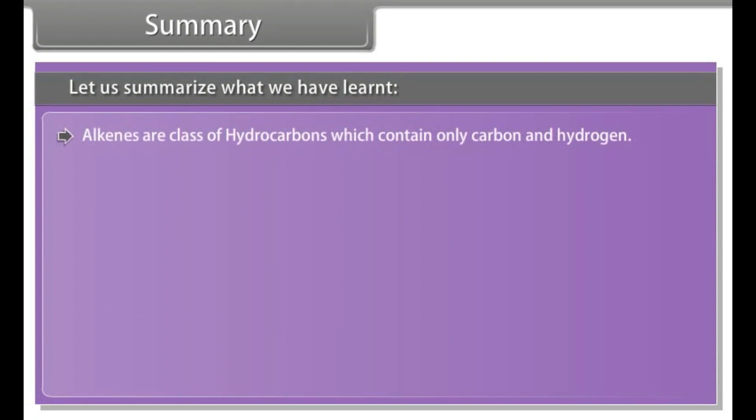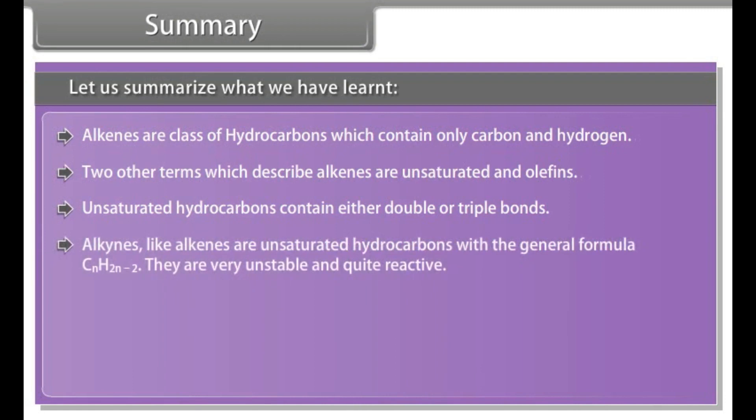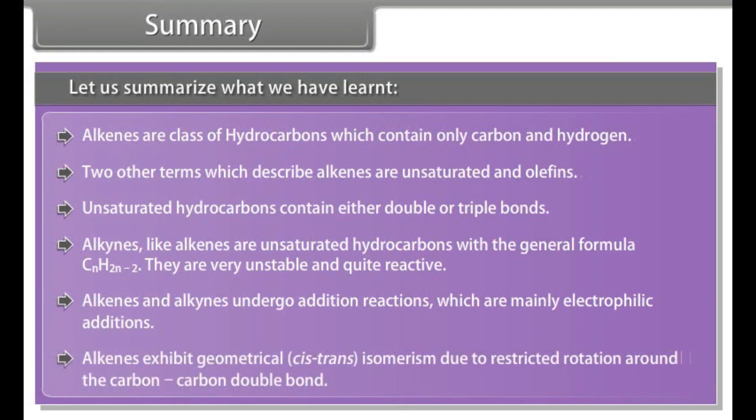Summary. Hydrocarbons which contain only carbon and hydrogen. Two other terms which describe alkenes are unsaturated and olefins. Unsaturated hydrocarbons contain either double or triple bonds. Alkynes, like alkenes, are unsaturated hydrocarbons with the general formula CnH2n-2. They are very unstable and quite reactive. Alkenes and alkynes undergo addition reactions which are mainly electrophilic additions. Alkenes exhibit geometrical cis-trans isomerism due to restricted rotation around the carbon-carbon double bond.